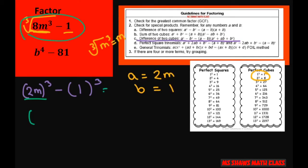So it can be 2m minus 1 times, now square your a, so you square 2m squared, that gives you 4m squared. Don't forget to square the 2 as well. Now multiply these two, that's just going to be plus 2m, and then square the 1 plus 1. And that's your final answer, we're just using the formula.